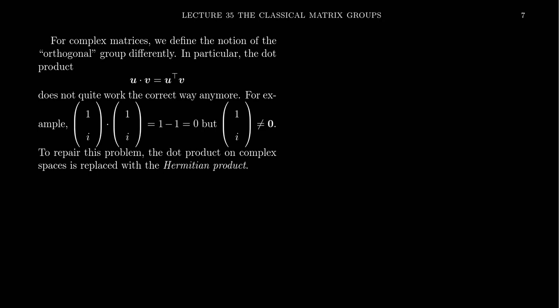In this video, I want to talk about the so-called classical matrix group known as the unitary group. It's very similar to the orthogonal group and the special orthogonal group, which were special subgroups of the general linear group of real matrices. The unitary group is essentially the complex analog of the orthogonal group.